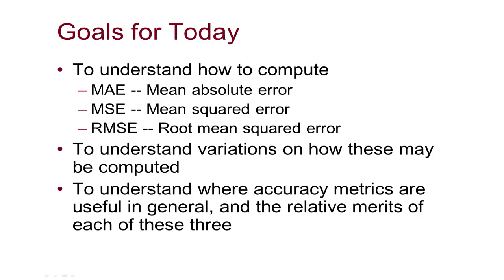Our goals for today are to understand how to compute three of the common prediction accuracy metrics: mean absolute error, mean squared error, and root mean squared error. Mean squared error is not commonly used, but it's useful to understand as a path towards root mean squared error. We'll also understand variations on how these can be computed and where this type of metric is useful.